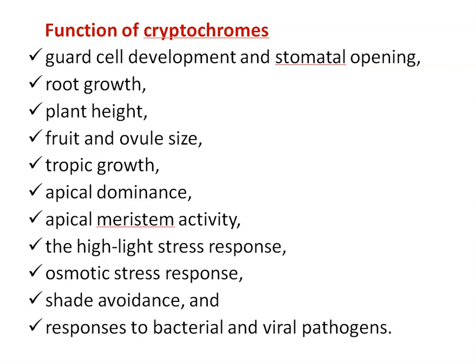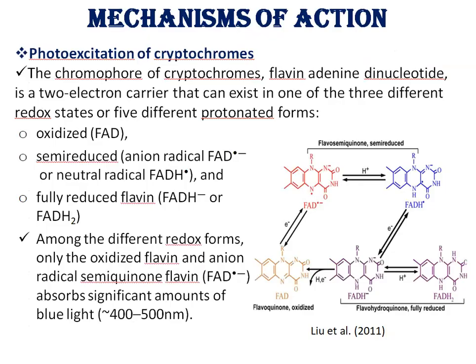The functions of CRY1 and CRY2 include mediating blue light regulation of de-etiolation and photoperiodic control of flowering. In addition, these two photoreceptors regulate other aspects of plant growth and development, including guard cell development, stomatal opening, root growth, plant height, root and ovule size, tropic growth, apical dominance, apical meristem activity, high-light stress response, osmotic stress response, shade avoidance, and responses to bacterial and viral pathogens.